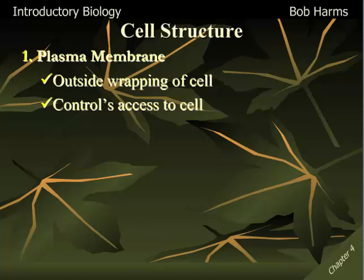If we think big picture and cell structure, the plasma membrane — that's the outside wrapping of the cell — makes up that surface area we talked about last time with our surface area to volume ratio. The plasma membrane is really going to regulate what gets into or out of a cell; it's going to control that exchange of materials.